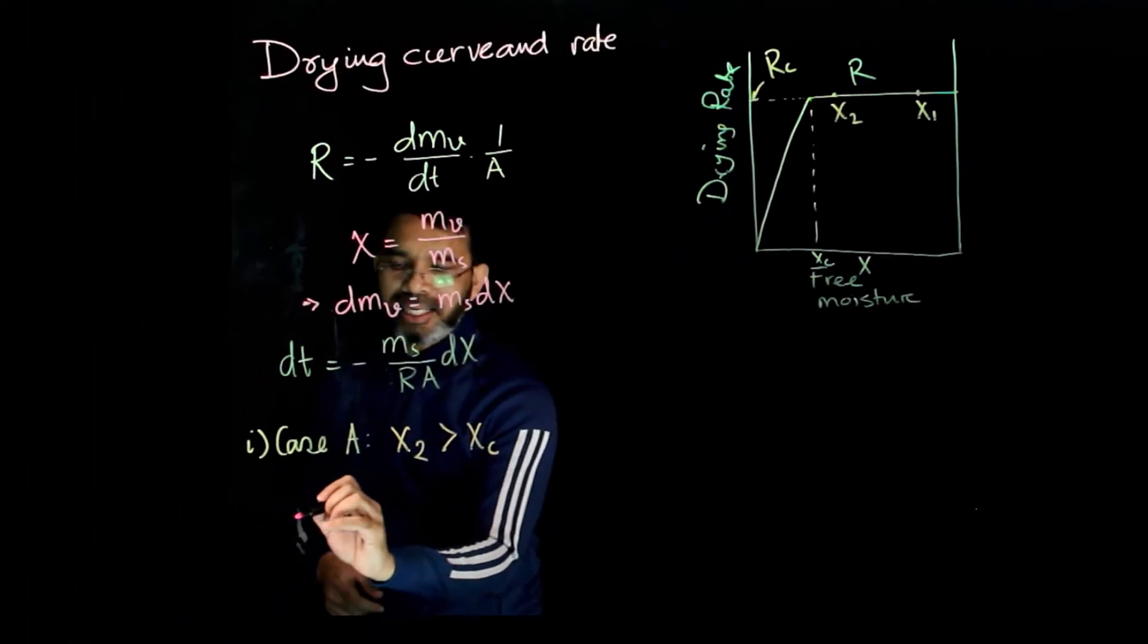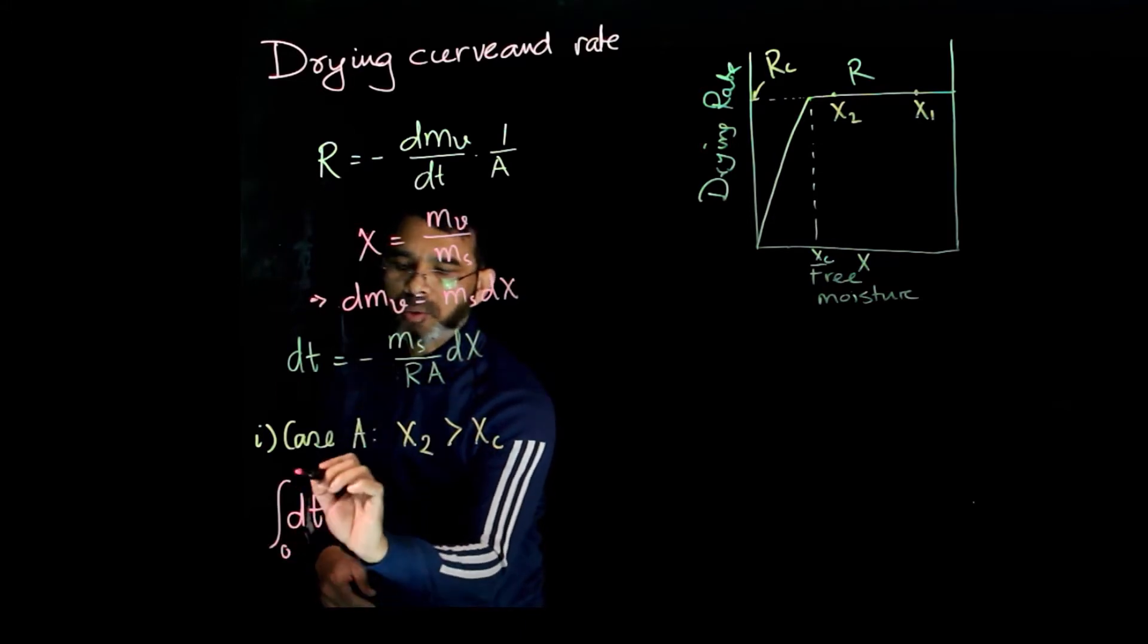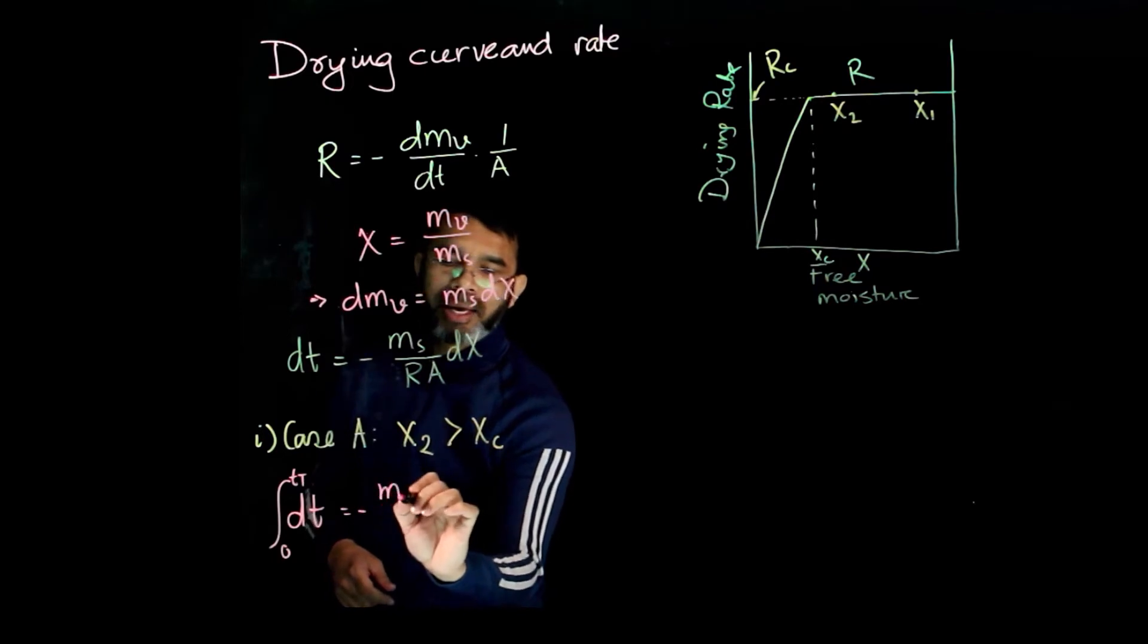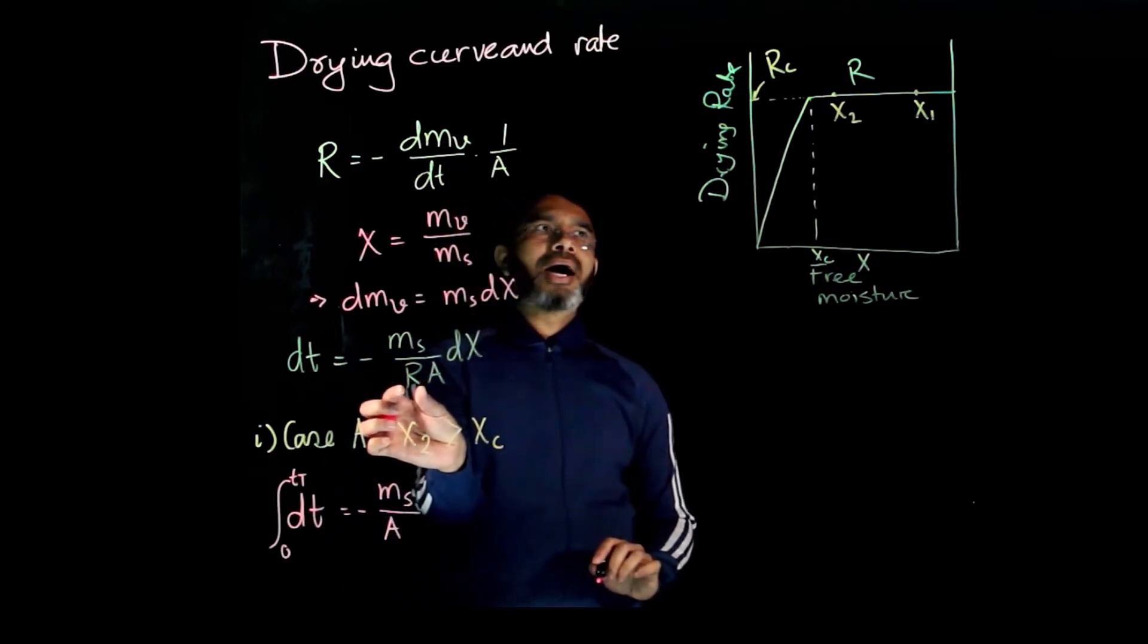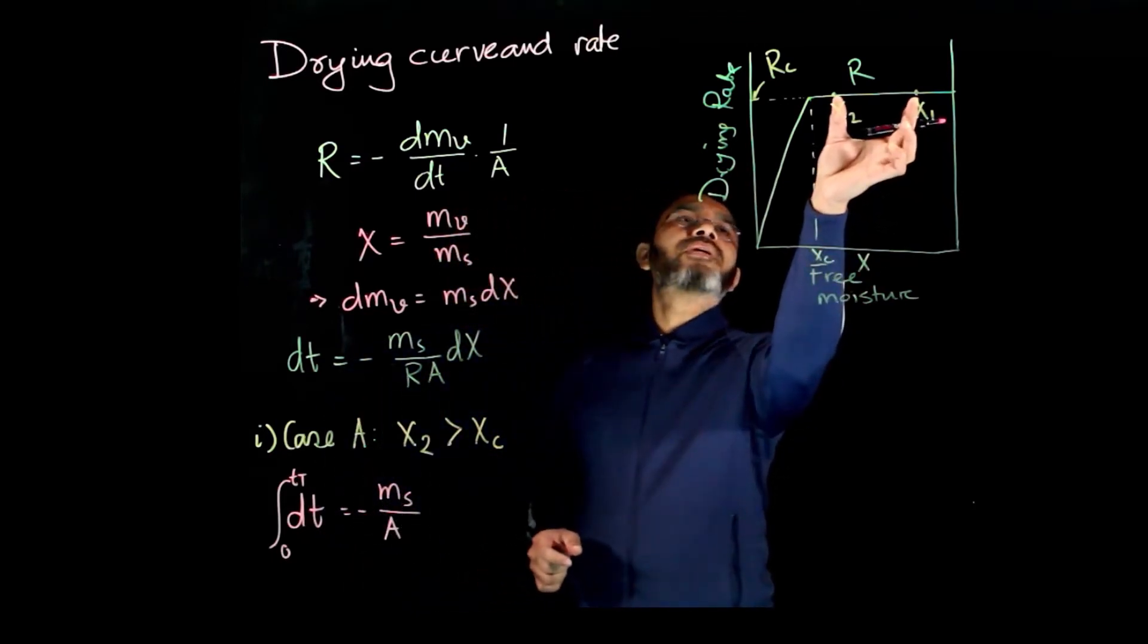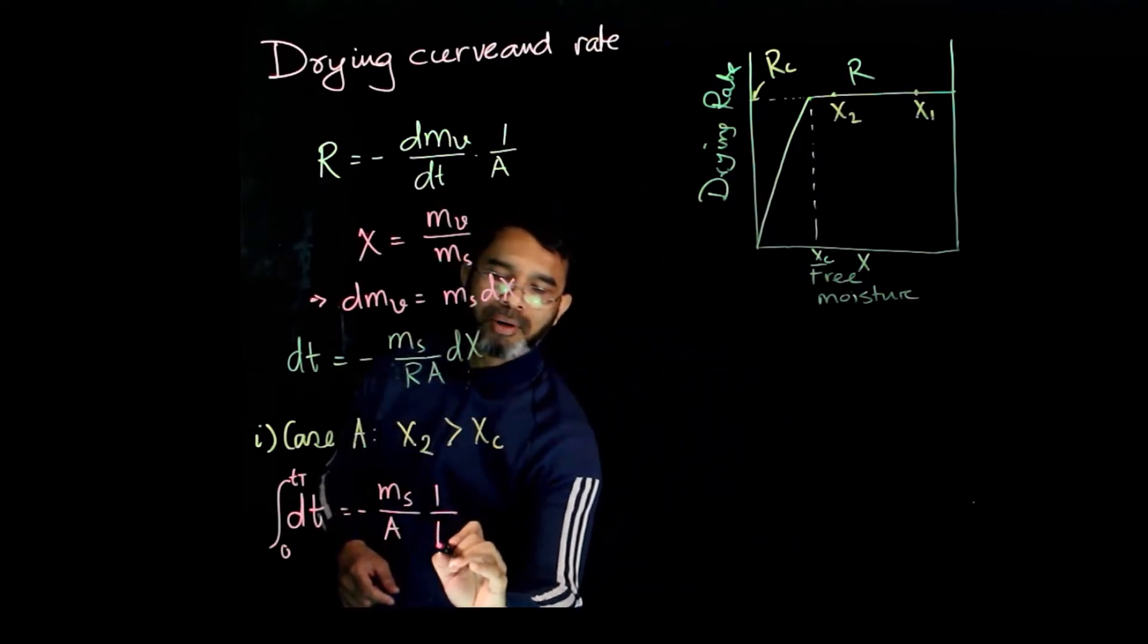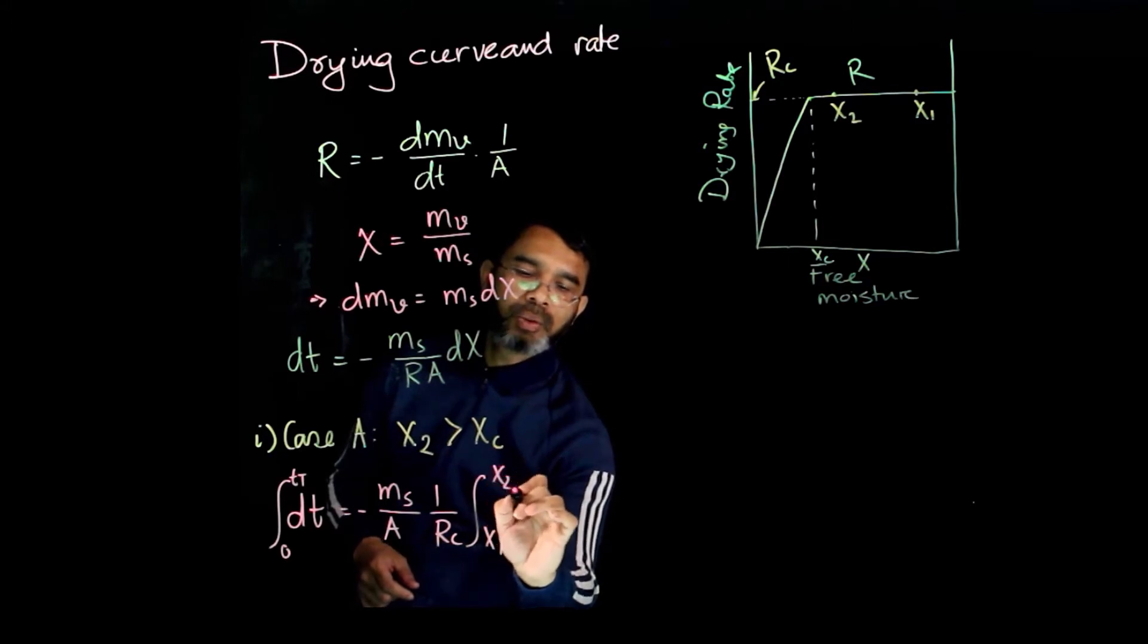If you integrate this between 0 to total time, will be ms over a. And now, if r is constant for this entire term, and this is rc, it will be 1 over rc. Integration between x1 and x2 dx.